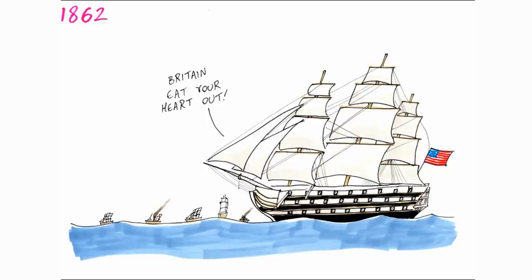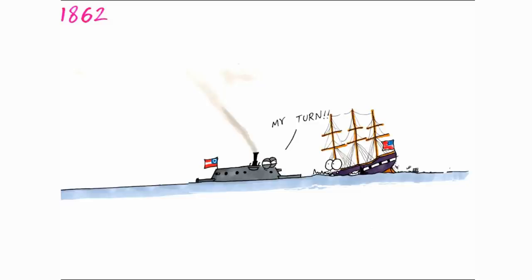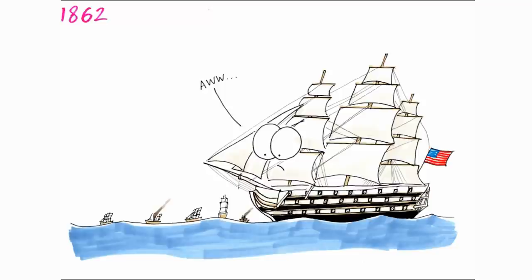The blockaded Confederacy knew they couldn't match the Union's fleet, so they developed ships with iron hulls and began converting their smaller fleet into ironclads. When the CSS Virginia went up against the wooden Union fleet, it decimated them. But the following day, the Union's first ironclad, the USS Monitor, arrived and the Battle of the Ironclads was fought to a draw. It revolutionised naval warfare forever — wooden warships were now obsolete.